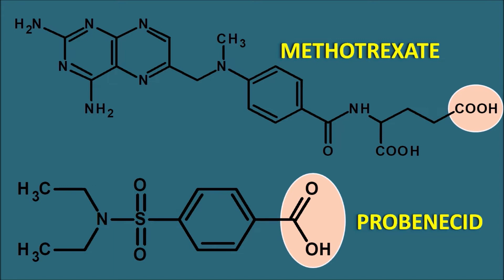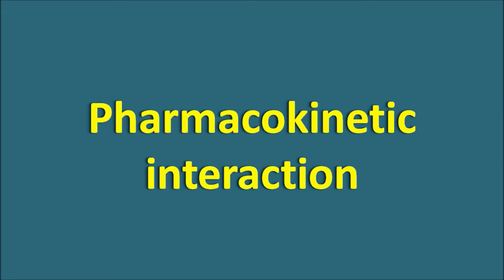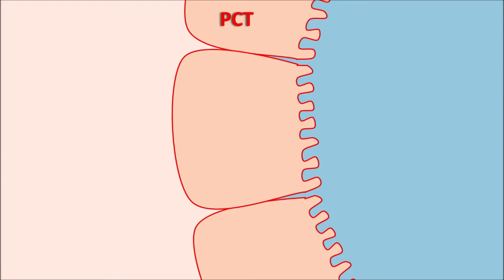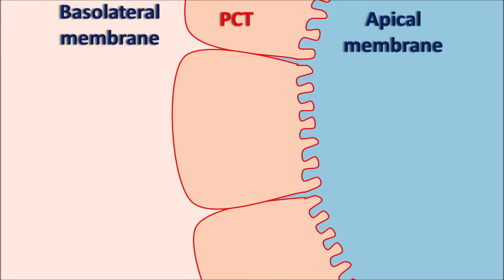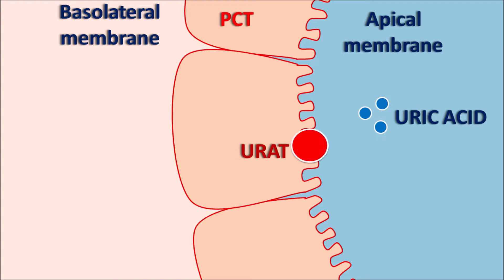This point is key to describing the interaction between Methotrexate and Probenecid — they interact via a pharmacokinetic interaction. At the proximal convoluted tubule, one membrane facing the tubular lumen is the apical membrane, and the outside is the basolateral membrane, which is connected with the systemic circulation. Here, uric acid present in the urinary filtrate can be reabsorbed into the systemic circulation through the URAT transporter — the urate transporter — which is responsible for uric acid absorption.